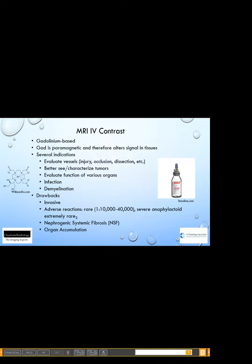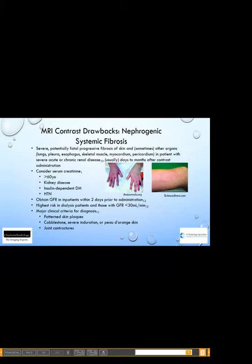Switching to MRI contrast: it is gadolinium-based. Gadolinium is a heavy metal that is paramagnetic and alters the signal in tissues. Indications are very reminiscent of CT contrast indications, with the added benefit of being able to see active demyelinating lesions in the neural axis. Drawbacks include being invasive, adverse reactions that are exceedingly rare, nephrogenic systemic fibrosis, and the newer topic of organ accumulation.